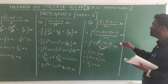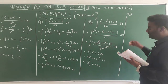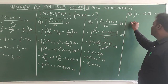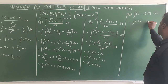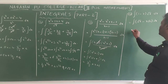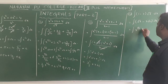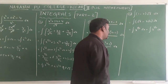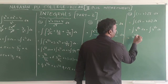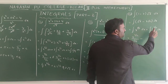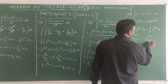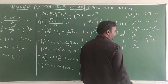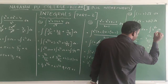Next, question 14: evaluate integral (1 - x) · √x dx. Multiply out with √x: 1·√x - x·√x dx. That equals integral x^(1/2) - x^(3/2) dx. Both are in x^n form. Applying x^n formula: x^(1/2) gives x^(3/2)/(3/2), and x^(3/2) gives x^(5/2)/(5/2). Sending 3/2 to numerator gives 2/3 · x^(3/2) - 2/5 · x^(5/2) + c.